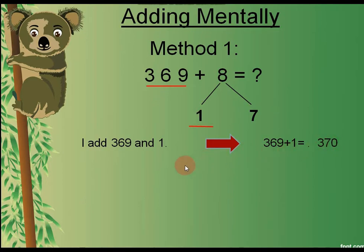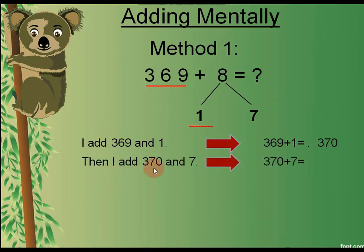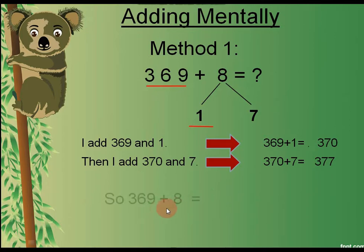The second step is to add 370 and the remaining number from the number bond, which is 7. You know very well that 370 plus 7 equals 377. So that means 369 plus 8 equals 377. This was the first possible method to solve the question mentally.